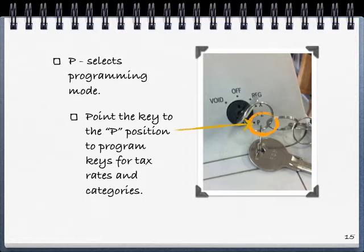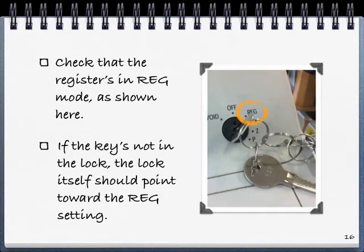Generally, look at the cash register's manual for more details on how to program various keys on the cash register. When you're ready to start using the cash register, check to make sure that the register's key is in reg mode. If the key is not in the lock, the lock itself should point towards the reg setting.